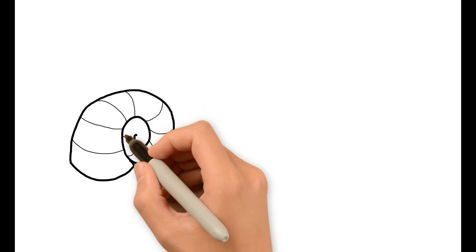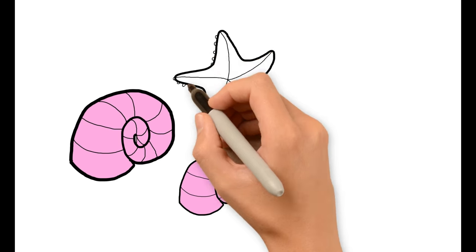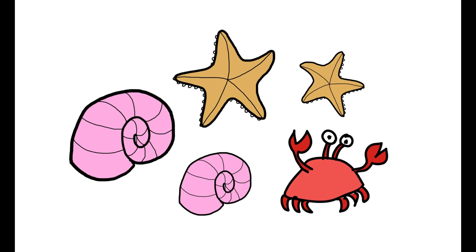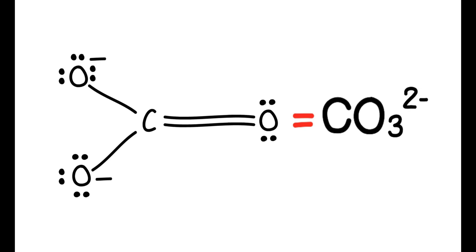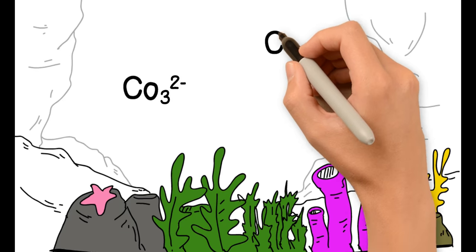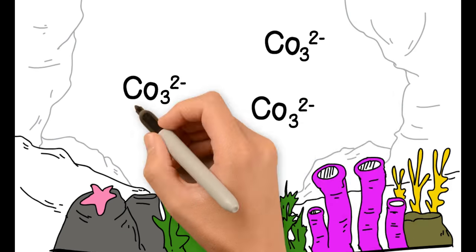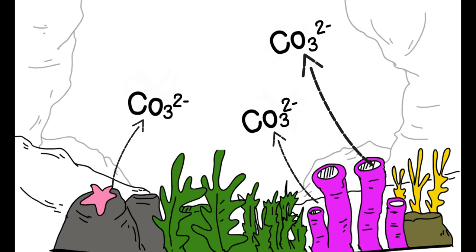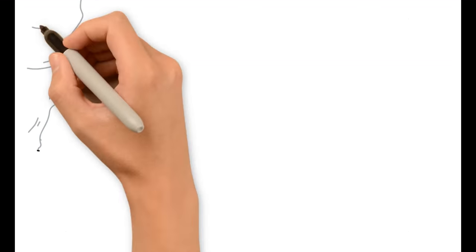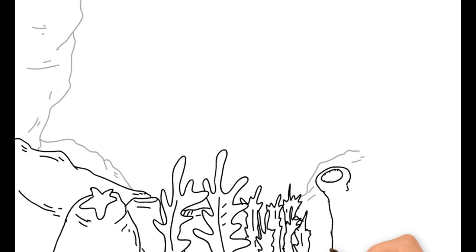Due to acidification, all the animals that build a calcium shell are in danger. These animals need carbonate ions to build a strong shell, but the acidification of oceans leads to a decrease in the concentration of carbonate ions in seawater. Acidic water also causes carbonate ions to dissolve off the surface of these animals, causing the shells to weaken.